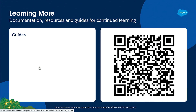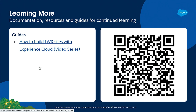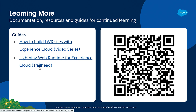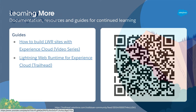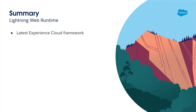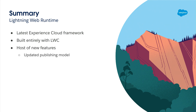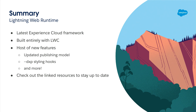If you prefer a more guided approach, I highly recommend the How to Build LWR Sites with Experience Cloud video series and the Lightning Web Runtime for Experience Cloud Trailhead modules. They cover a lot of what I've talked about here and really guide you through everything in detail. To sum this up: Lightning Web Runtime is the newest and latest Experience Cloud framework, built entirely with LWC and coming with a host of new features including an updated publishing model, DXP styling hooks, and much more. Please check out the linked resources on the earlier slides to stay up to date on all things Lightning Web Runtime.